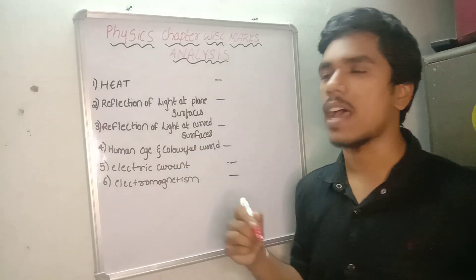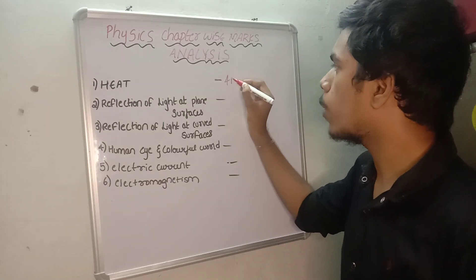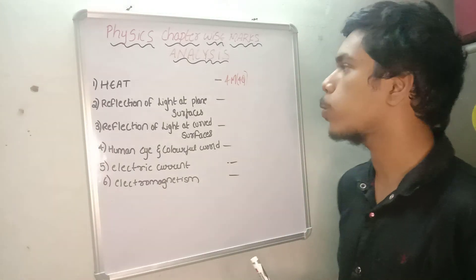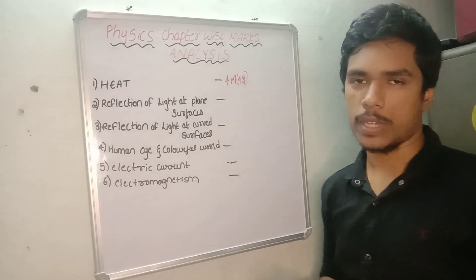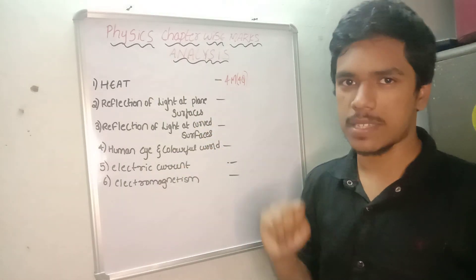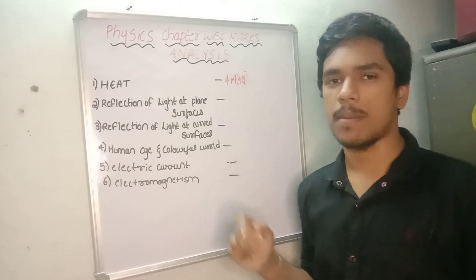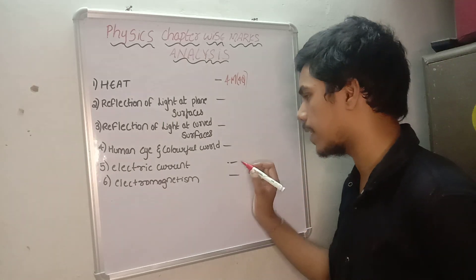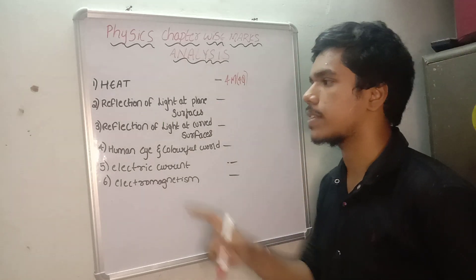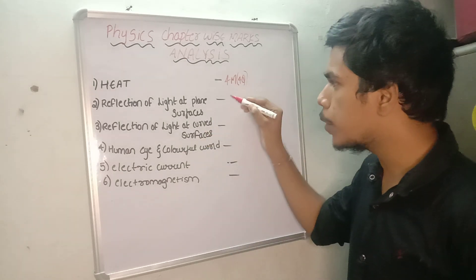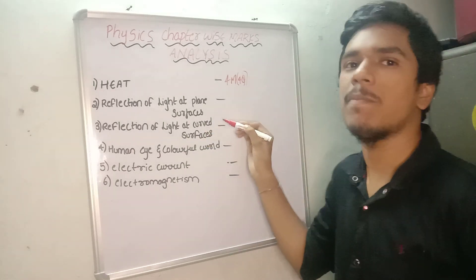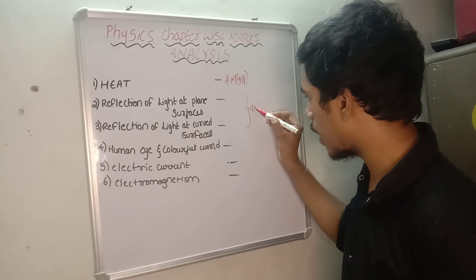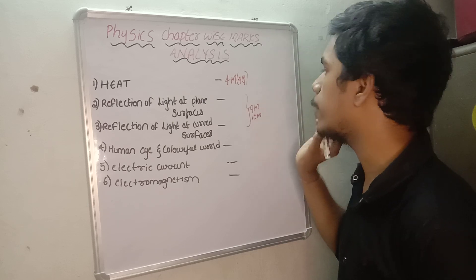First of all, heat. Last year, number of questions — 4 marks are done, 4 questions are done in the previous years for heat. Temperature-based sums, Kelvin-based sums, some experiments — if we do those sums, we will get 4 marks. Next, reflection of light at plane surfaces and reflection of light at curved surfaces — these two chapters carry maximum weight, done in previous years with 9 to 10 marks in between.